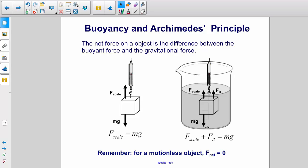So if you remember, all the forces have to be equal to zero, F net has to be equal to zero. We have F scale plus F buoyant equals mg.